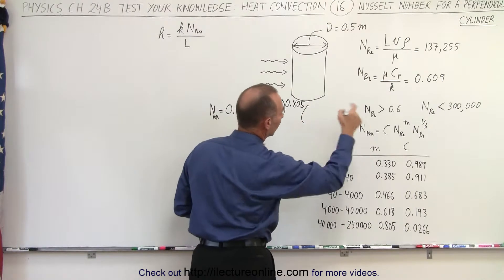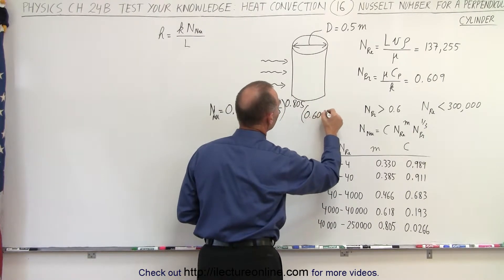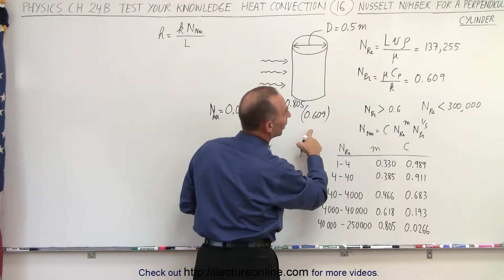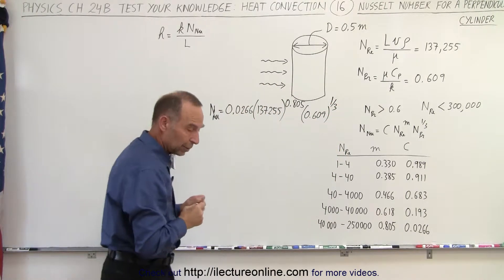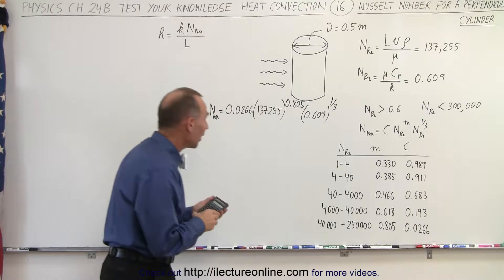Multiply times the Prandtl number, which is 0.609, and then raised to the one-third power, which is typical. So now with a calculator, let's find out what those values are equal to.